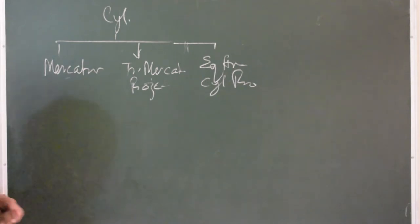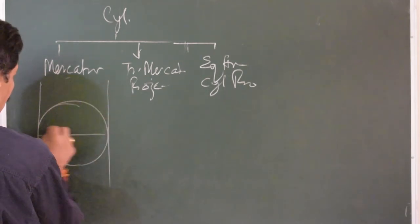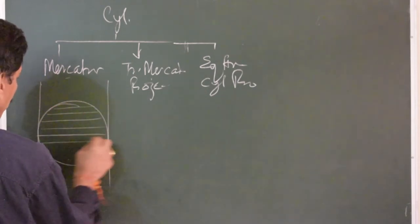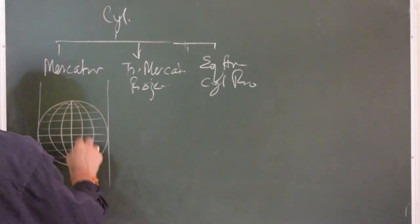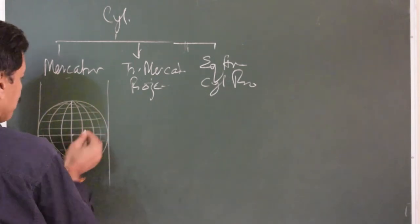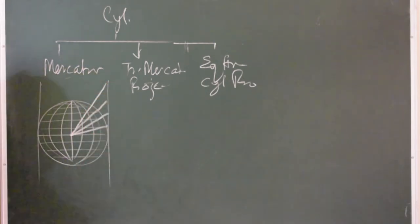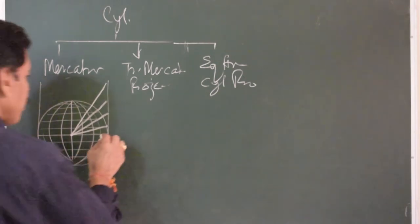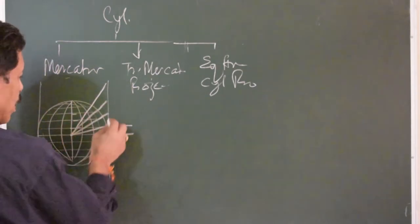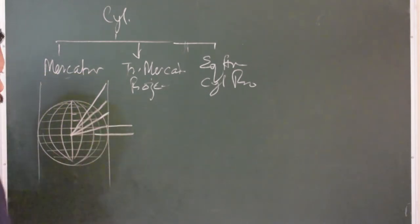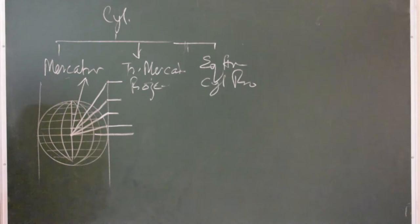What happens in Mercator projection can be understood with a simple illustration. We have a globe that is transparent — crystal transparent — and at the center of the globe there is a very powerful point lamp. When the light is switched on, the graticules are cast on the inner surface of the cylinder. The distance between the parallels of latitude is equal on the globe, but as it is projected on the inner surface of the cylinder, the distance between the parallels increases. If you want to project the polar areas, they cannot be projected.